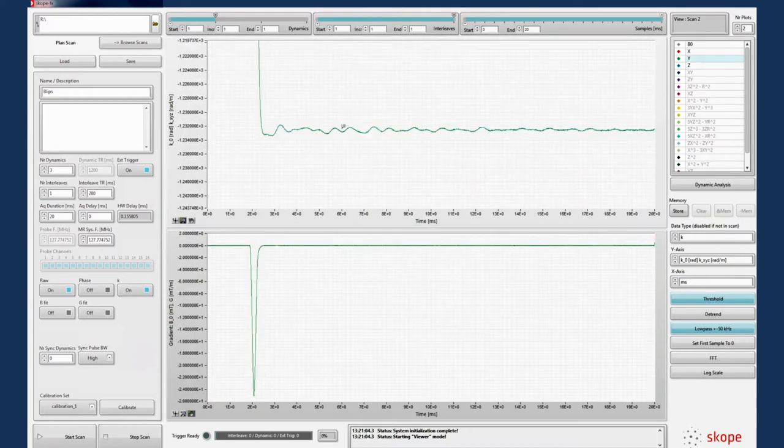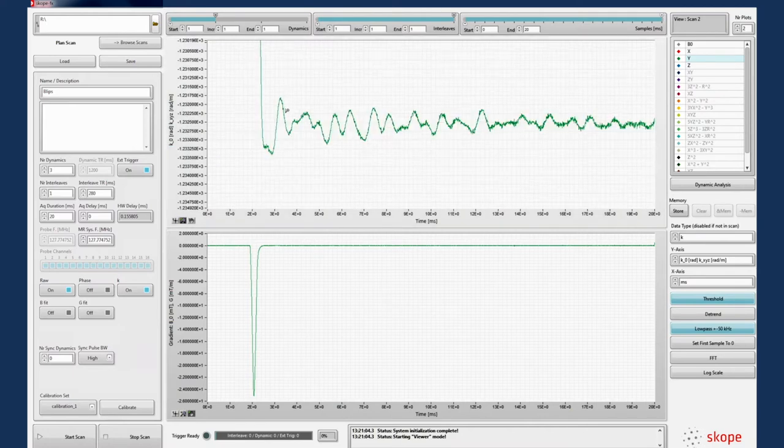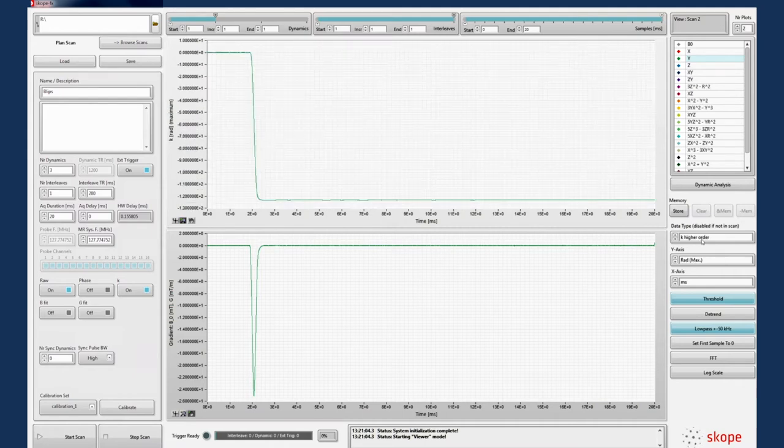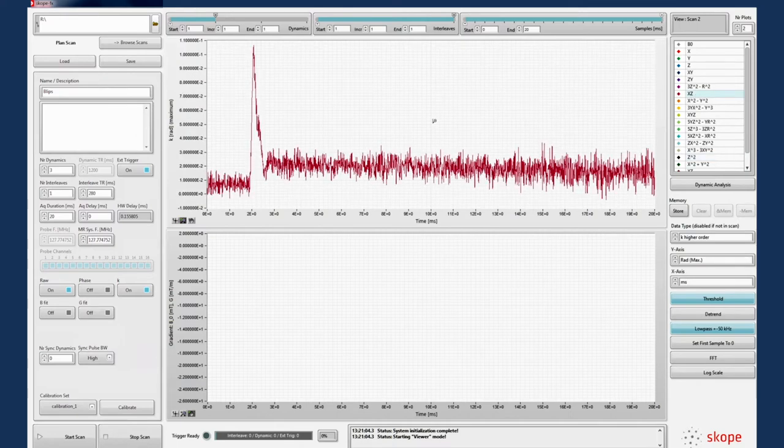The complete method for calculating a gradient impulse response function is outlined in a paper by Johanna Vanezio in MRM 2016. Such measurements with the dynamic field camera allow for direct, fast and accurate characterisation of gradient and shim systems, such as frequency responses and higher order field dynamics.